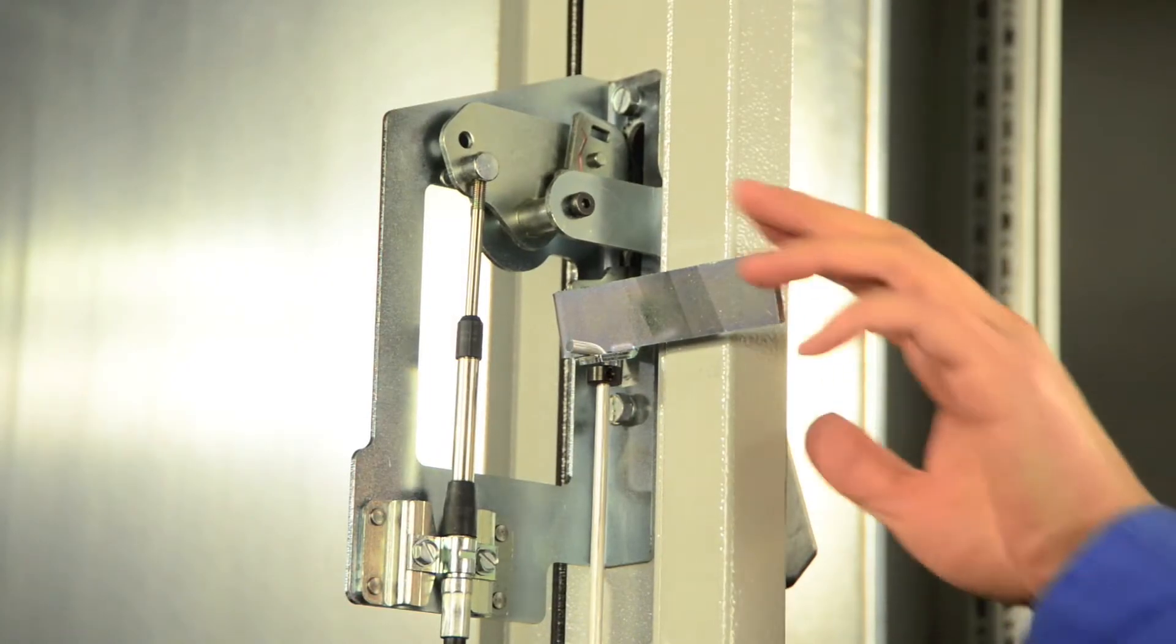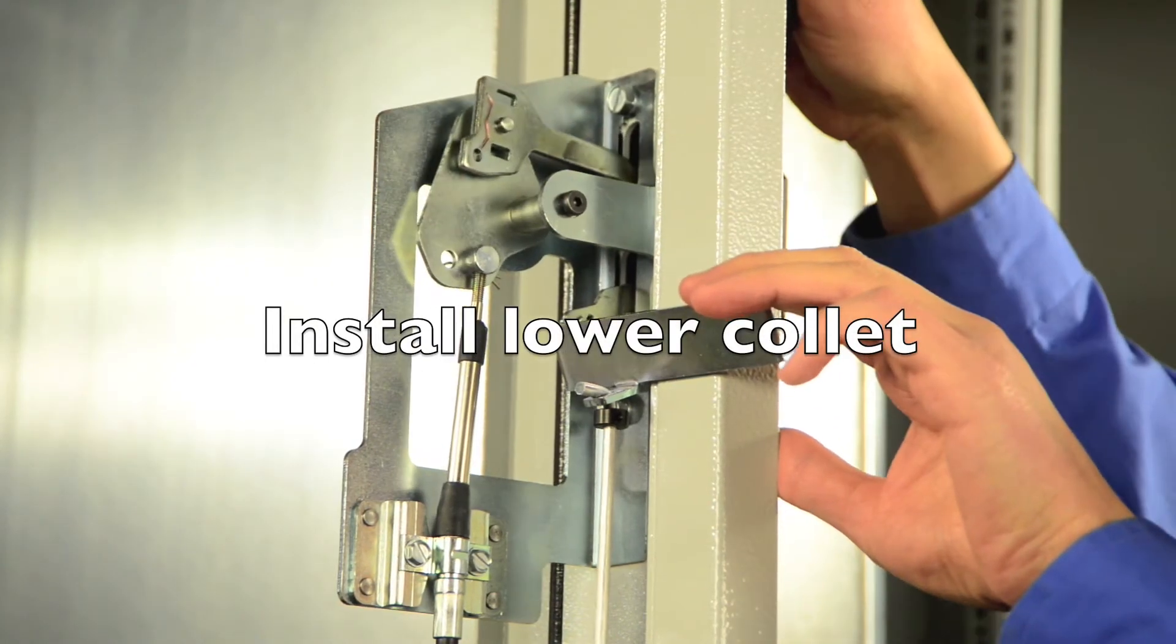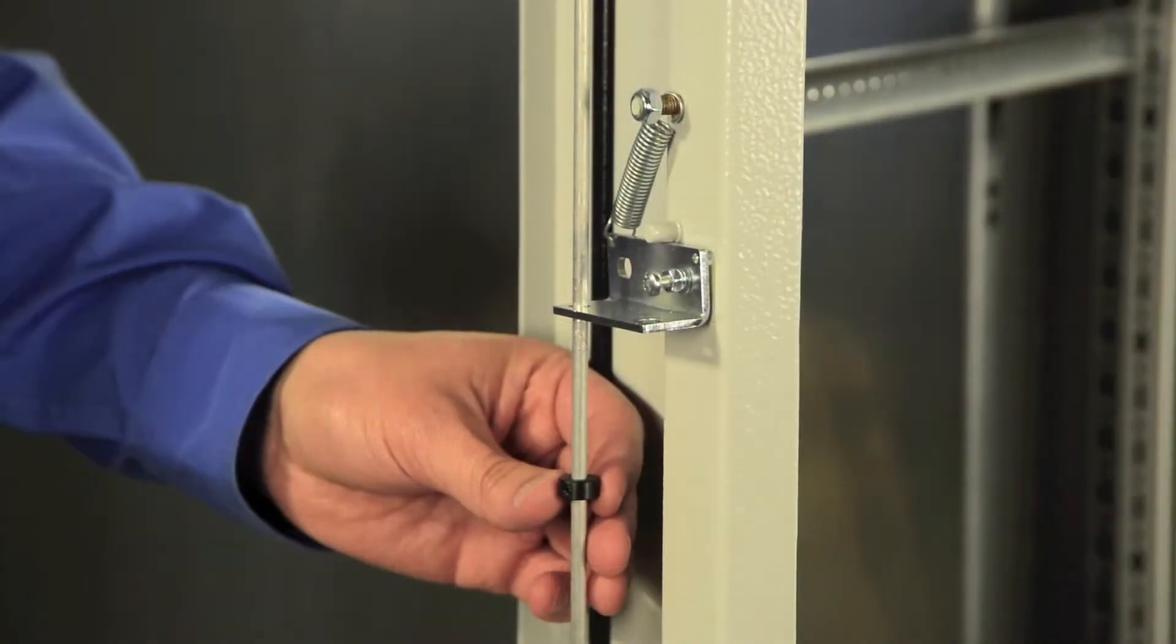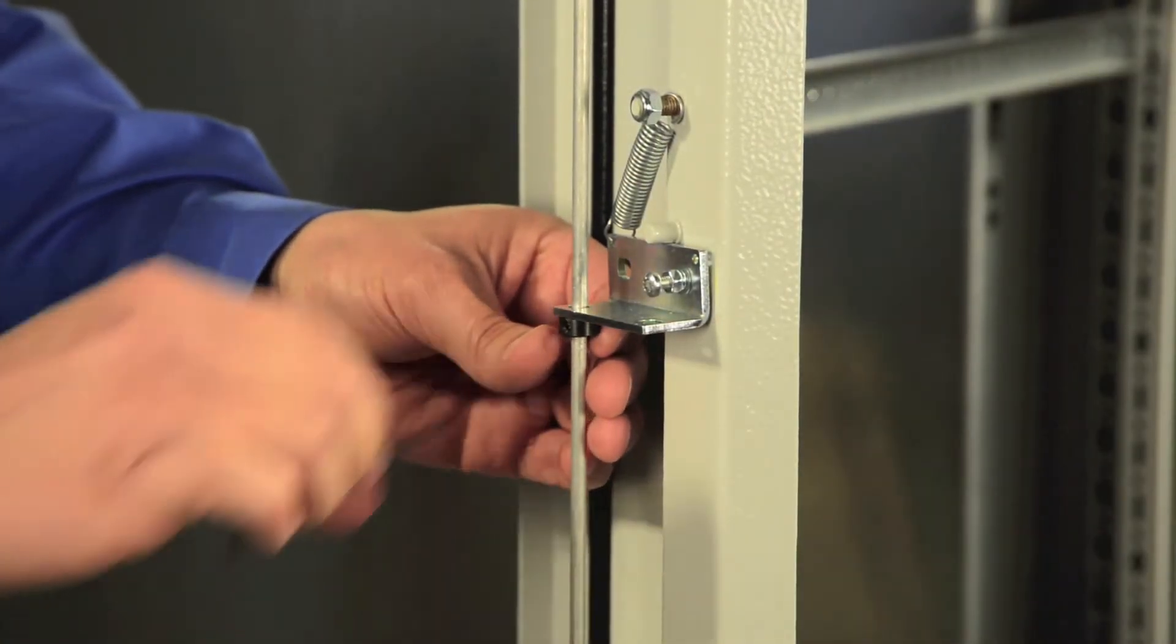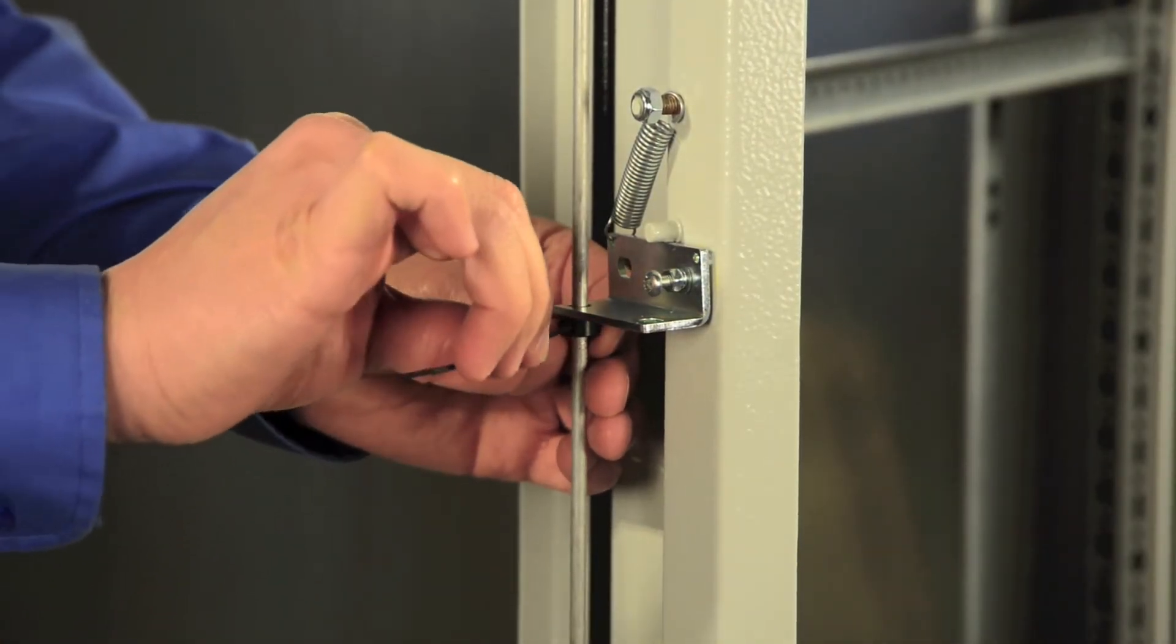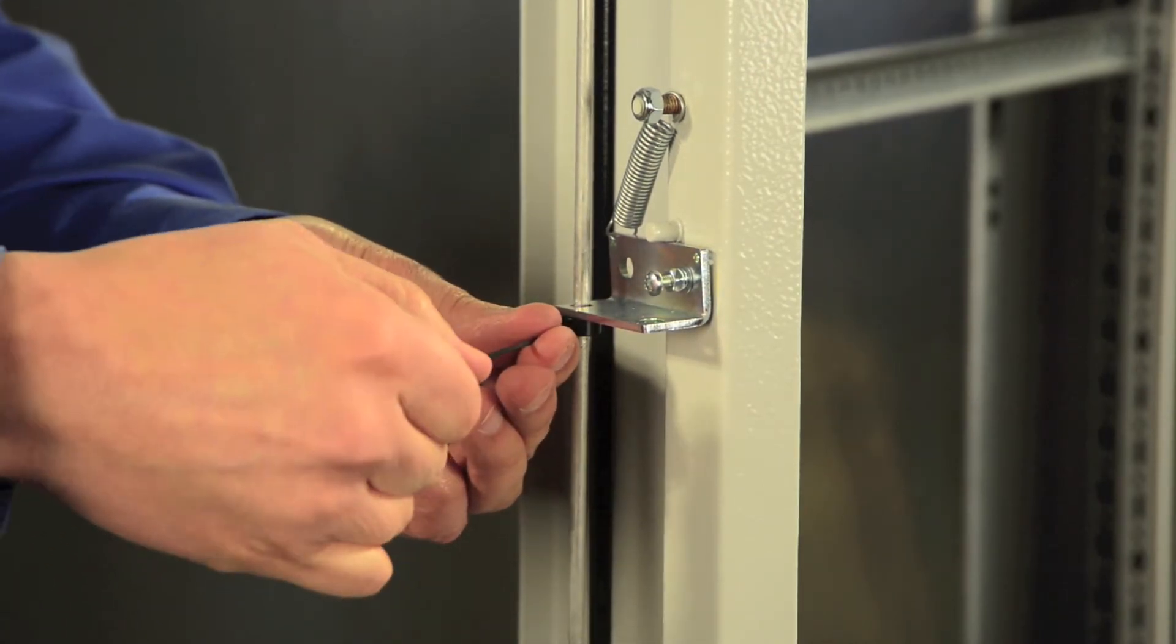Turn the operator handle to the ON position by first pushing down on the defeater lever. Then position the lower collet flush with the activator bracket and tighten using the supplied 1.5 mm hex key.